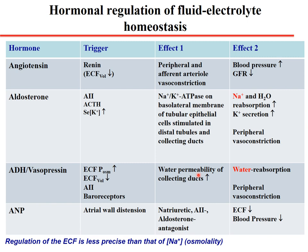Vasopressin also causes peripheral vasoconstriction. Atrial natriuretic peptide is triggered by atrial wall distension, causing natriuresis, antagonizing angiotensin II and aldosterone, leading to decreased extracellular fluid and decreased blood pressure.